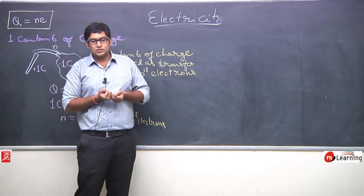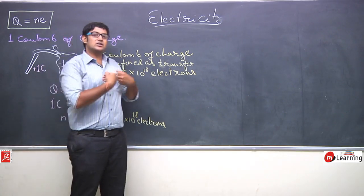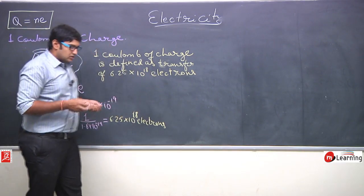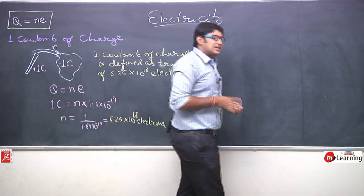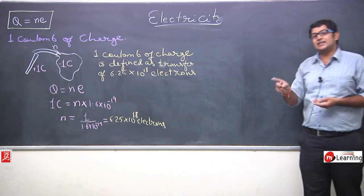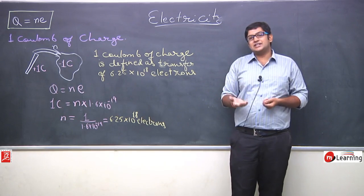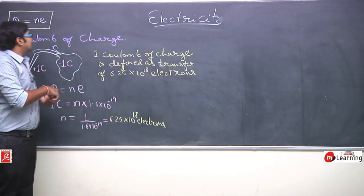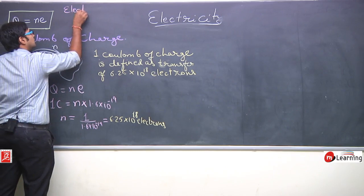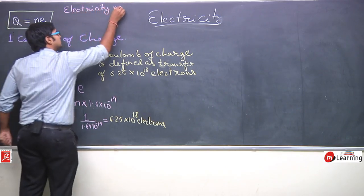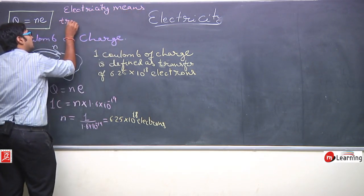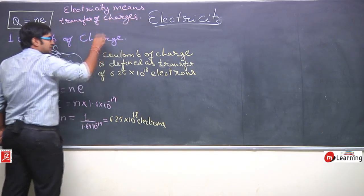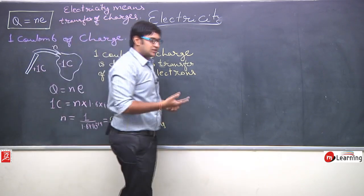If electrons are accepted by a body, we say the body is getting negatively charged. If a body is donating electrons, that body is getting positively charged — just as happened with the silk and glass rod. We have understood charge very well. Electricity happens because of electrons. Ultimately, electricity is nothing but the transfer of electrons — or more broadly, the transfer of charges — from one body to another.